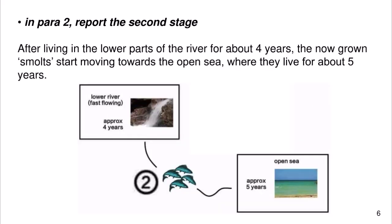In paragraph 2, report the second stage: 'After living in the lower parts of the river for about four years, the now grown smolts start moving towards the open sea, where they live for about five years.'